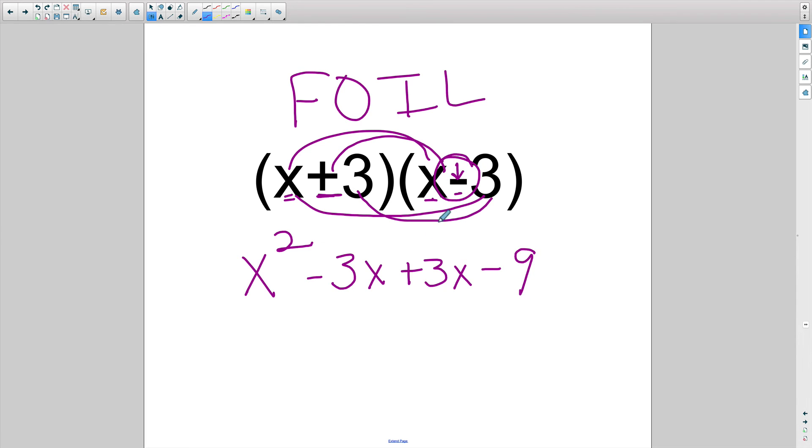Now, if I want to combine like terms, obviously I just have to bring this x squared down because there's no other x squareds to combine with. And then I have a negative 3x plus 3x. Well, this cancels out. This equals 0. So I can just get rid of them and then just bring down, be careful here, the negative 9. In this situation, x squared minus 9 is the correct answer.